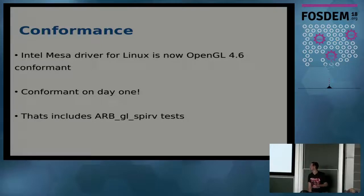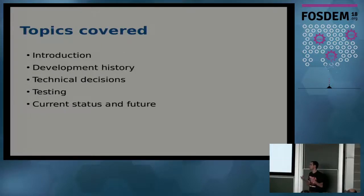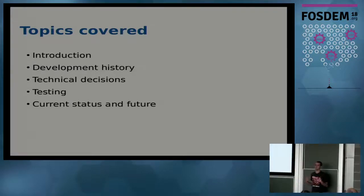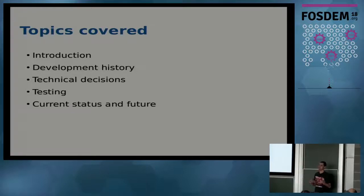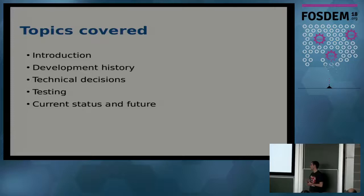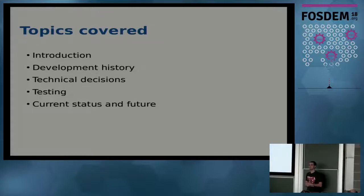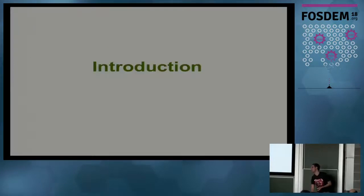The topics I'm going to cover: an introduction to what this work is related with, a summary of the development history — what we found when we started, what we have, and how we solved those issues. That leads to the technical decisions and the work we did. I'll also mention how we test the work and finally a summary of the current status and future.